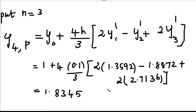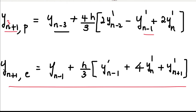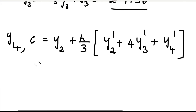Next, the corrector formula takes place. The Milne's corrector formula is: y(n+1)_c = y(n-1) + (h/3)·[y'(n-1) + 4·y'(n+1) + ... ]. The values inside the bracket are derivatives. Substituting n = 3, we reduce it to find y4 corrector.